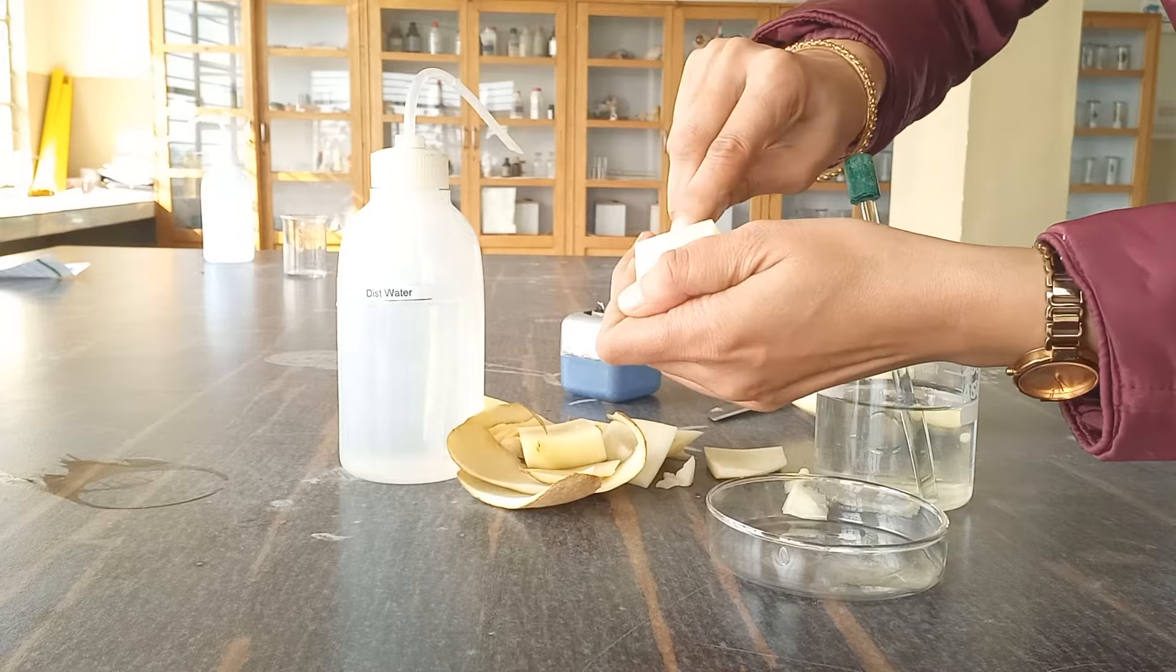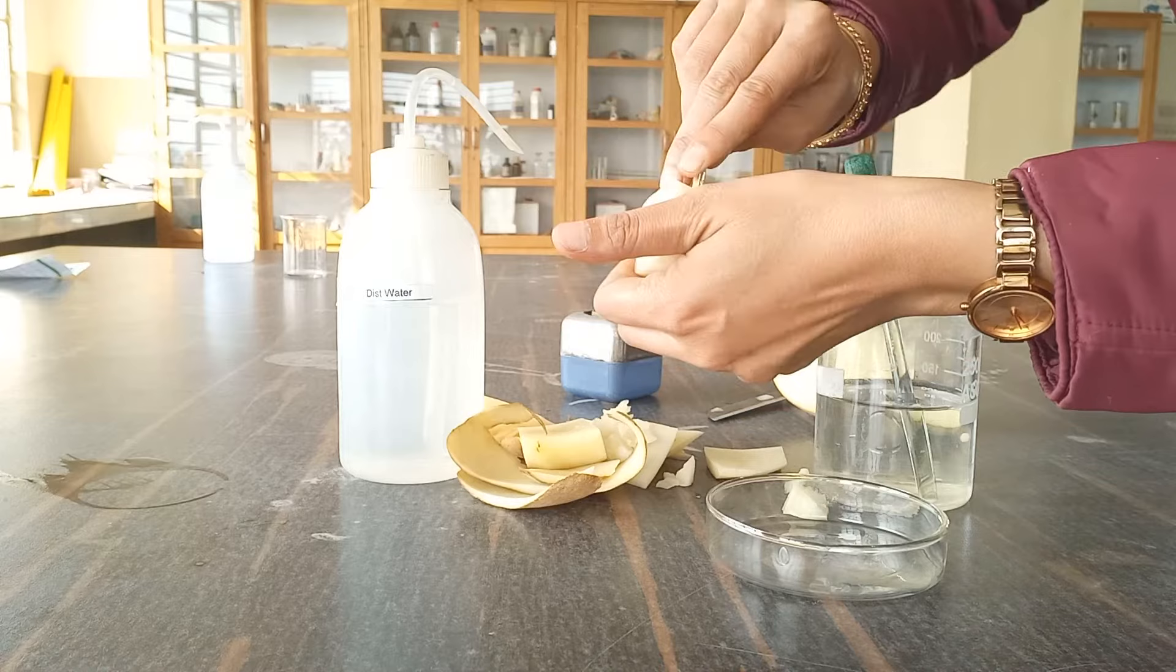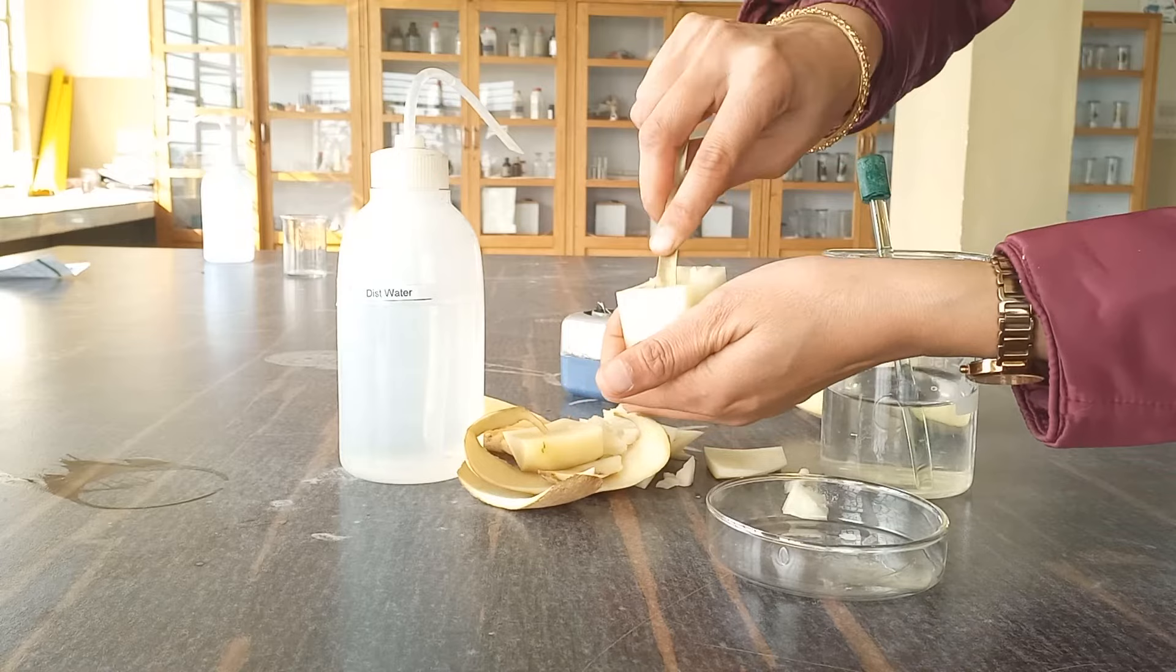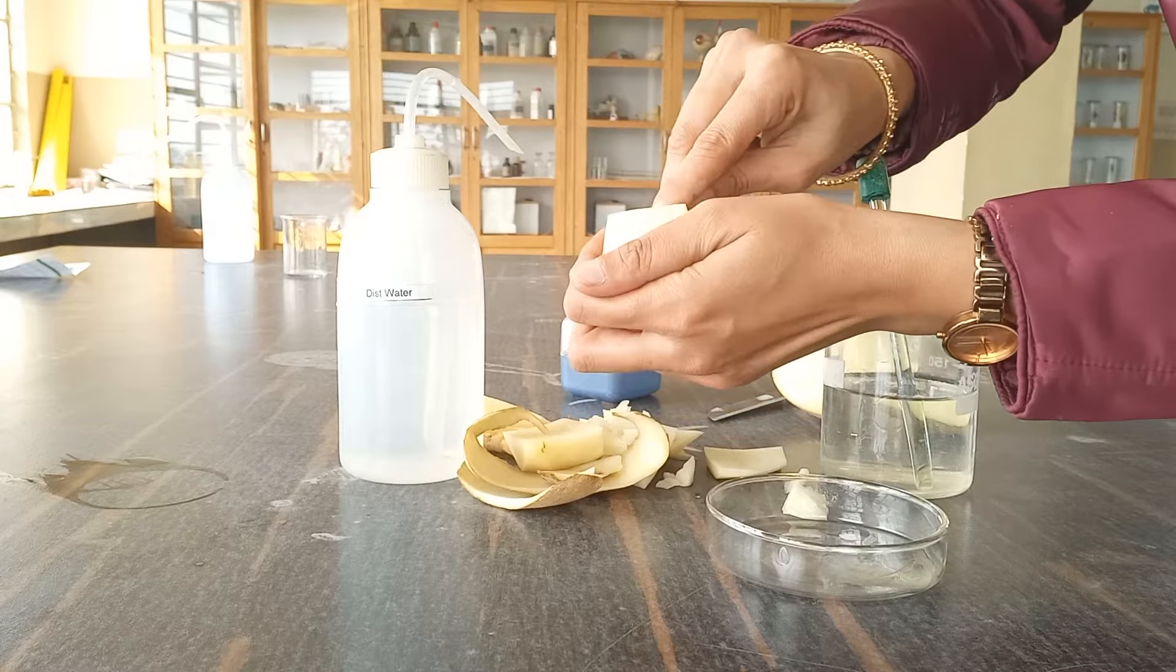So to make it even, to make it uniform, we are going to scrape from the base, from the sides, so that we can get a thin layer at the base which will act as a semi-permeable membrane.